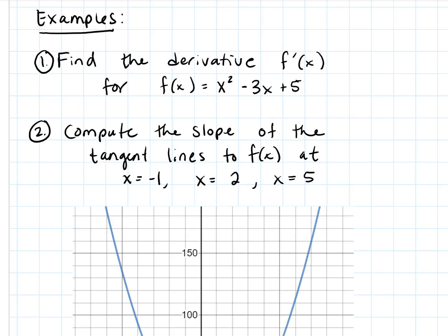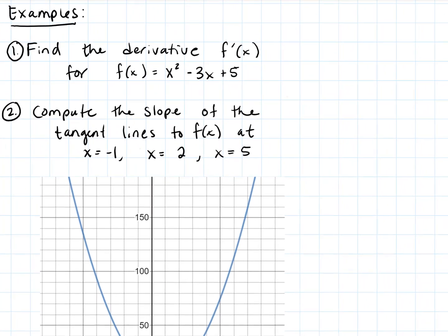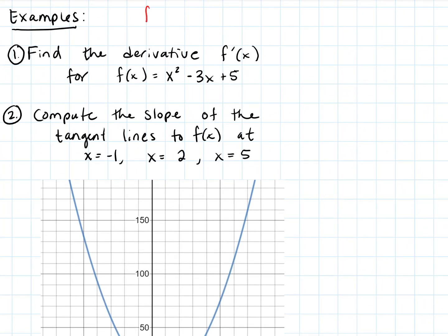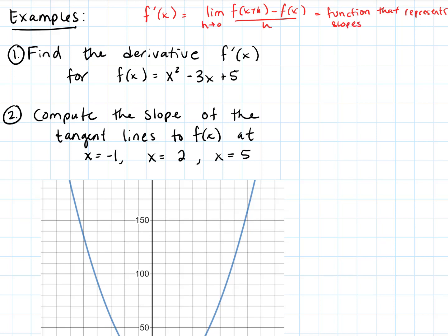For our first example, let's find the derivative f prime of x for the polynomial f(x) = x squared minus 3x plus 5. The mechanics are nothing new — just like the last section where we did it for a, now we're doing it for x. We start by writing that f prime of x is defined as the limit as h goes to zero of f of x plus h minus f of x over h. This gives us a function that represents the slopes of tangent lines to f of x.